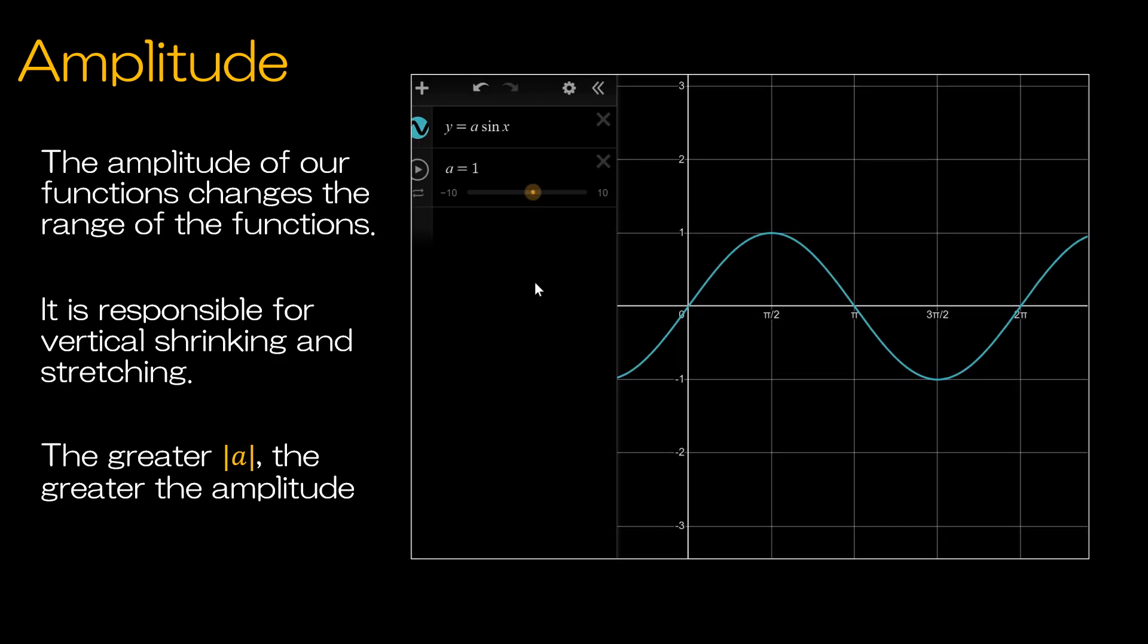We're going to begin with the amplitude. So this is the parent function for sine. And notice in Desmos, I've just typed in y equals a sine x, and then I put a equals 1. Because if I didn't have this, Desmos wouldn't know what to do. So you have to give a a value. And you can certainly just replace a with 1 in the function as well. But again, this is that parent function, and this is one period, so from 0 to 2π.